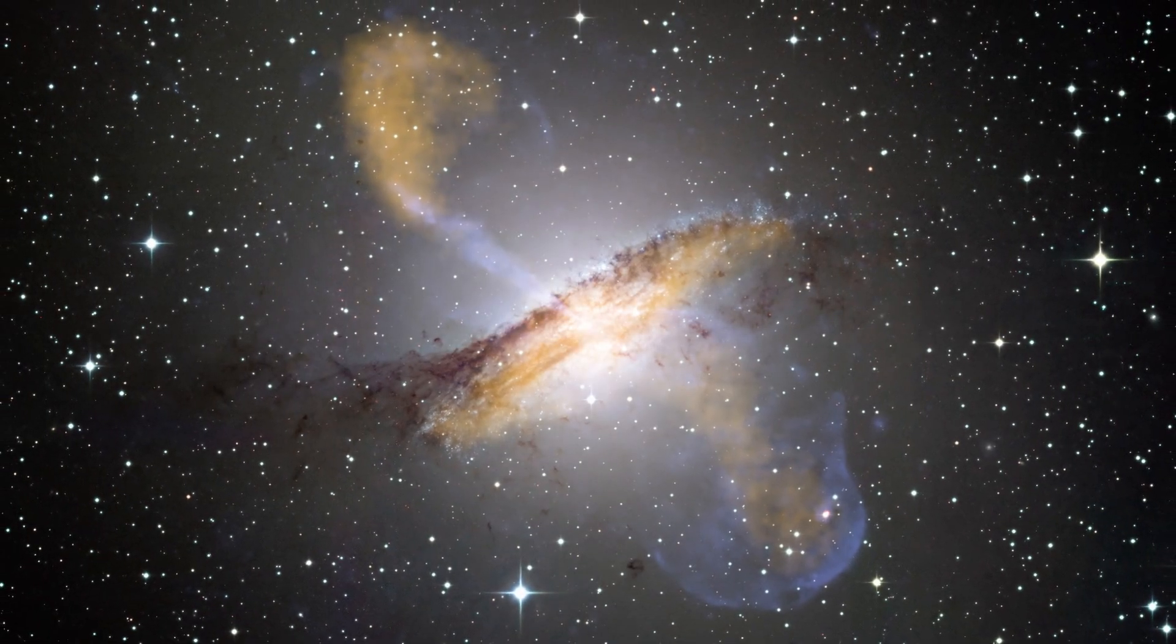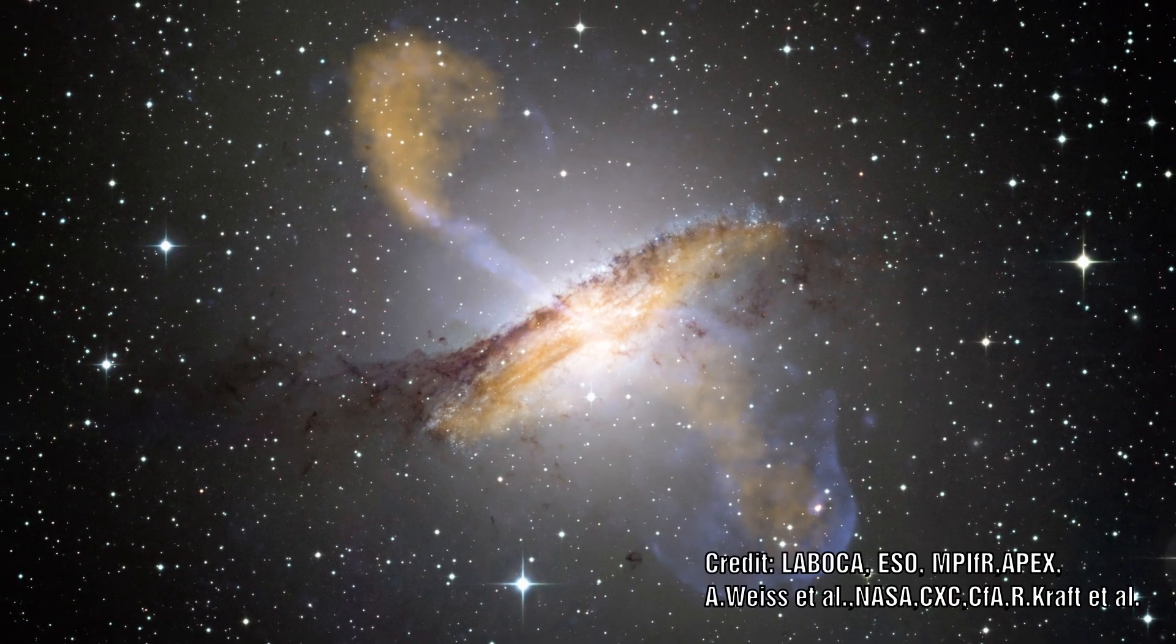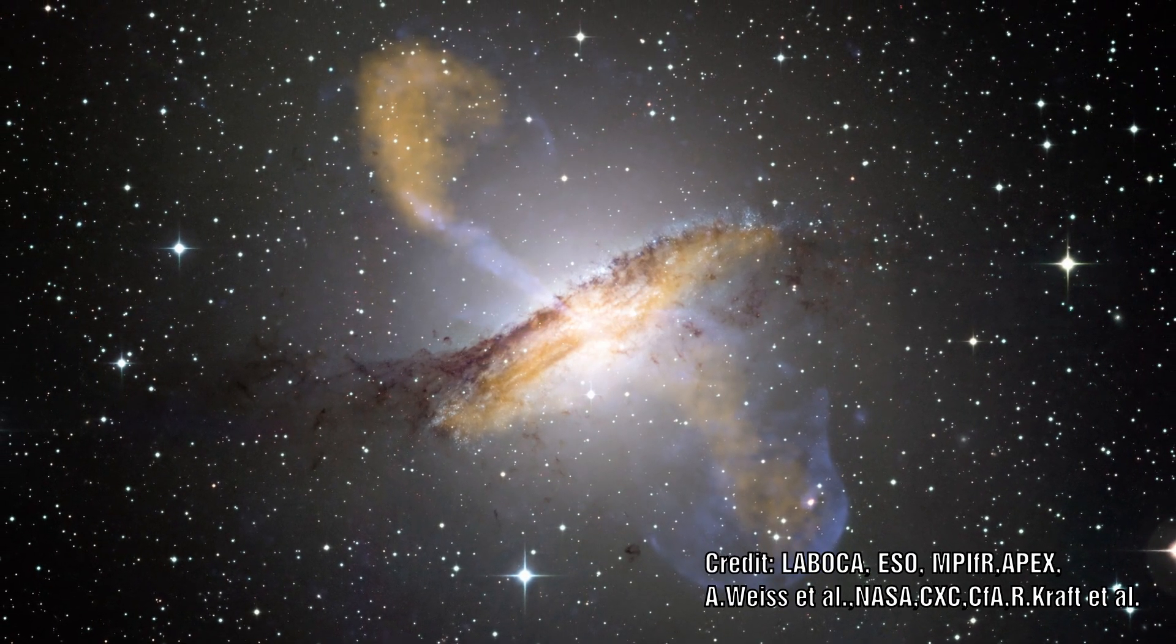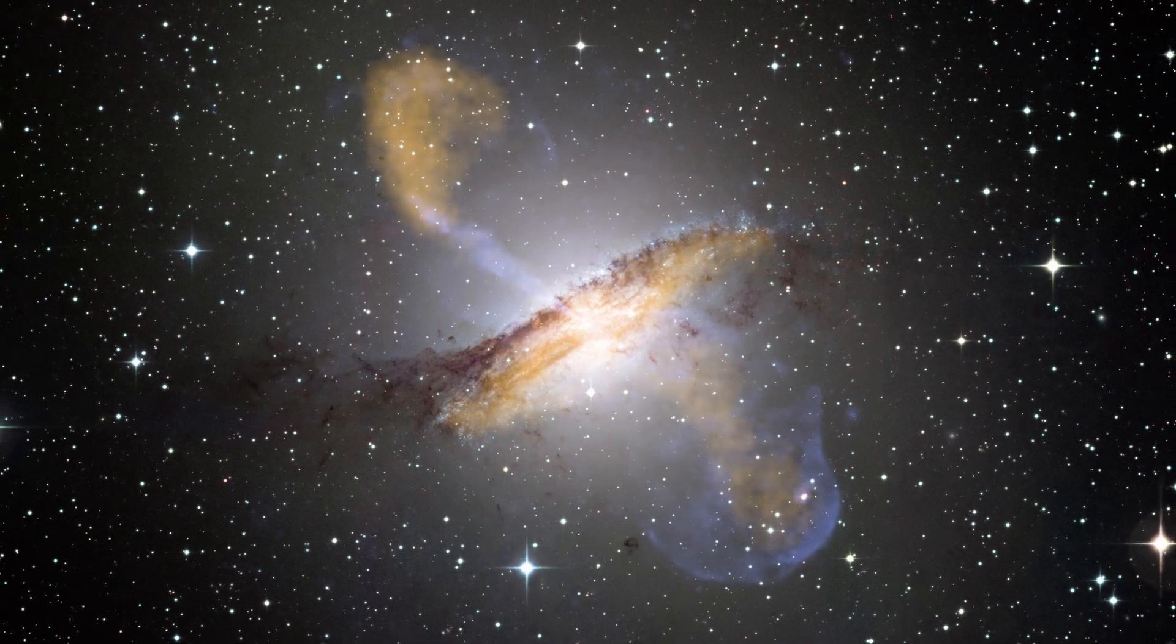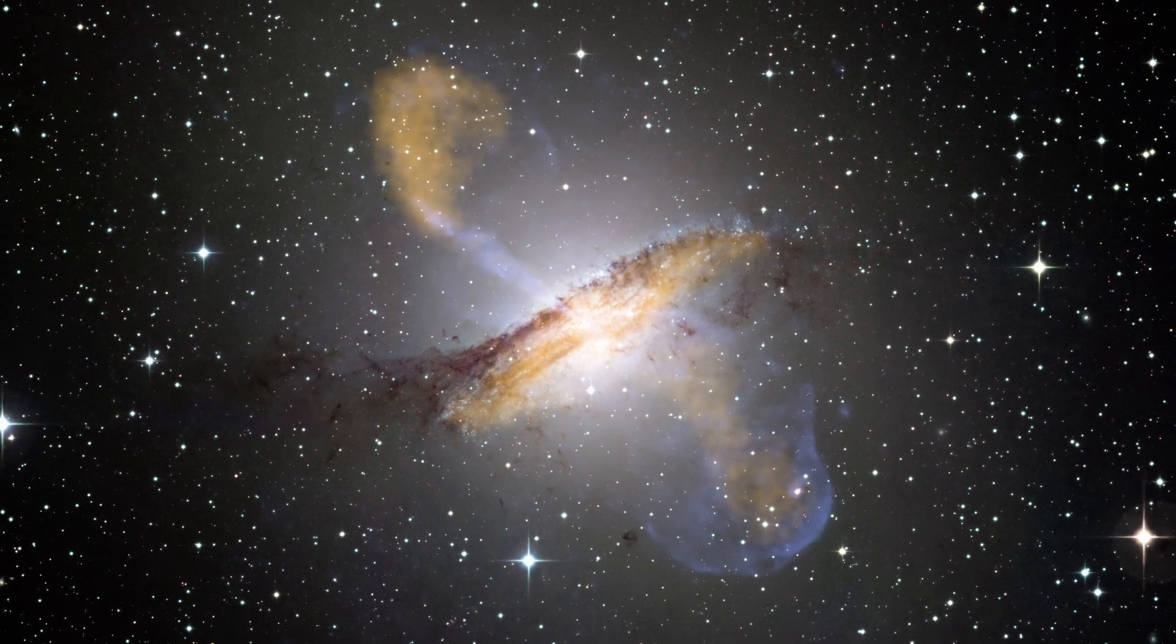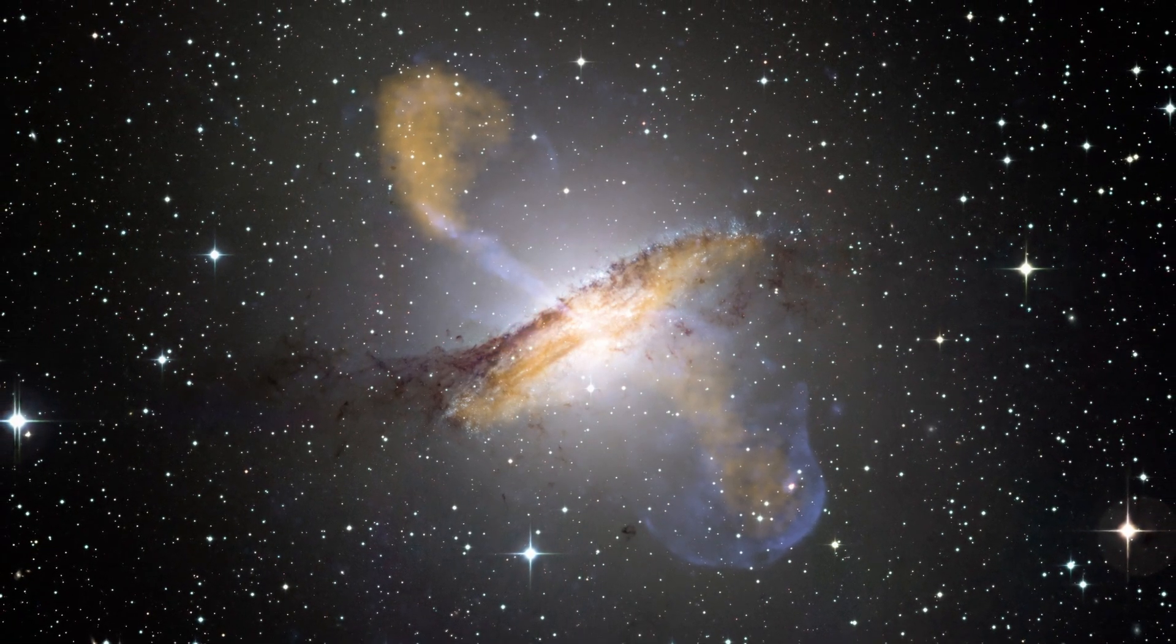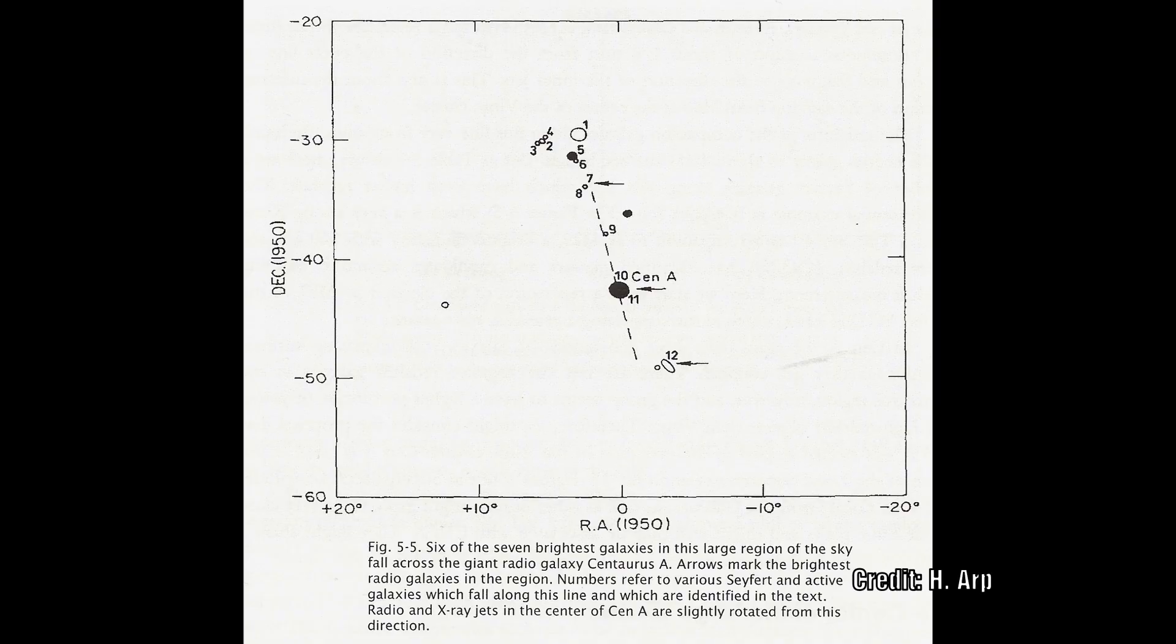The Centaurus line. If we examine any other giant radio galaxy not in the Virgo cluster, will we once more see this same pattern? If we examine the area around Centaurus A, then we see six of the seven brightest galaxies fall along a line centered on the radio galaxy Centaurus A.